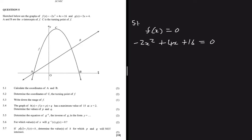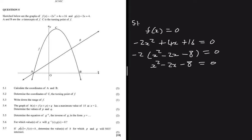We take -2 as a common factor, giving -2(x² - 2x - 8) = 0. Dividing both sides by -2 gives x² - 2x - 8 = 0. We then factorize: which two numbers multiply to give -8 and add to give -2? That is -4 and 2, so we get (x - 4)(x + 2) = 0.